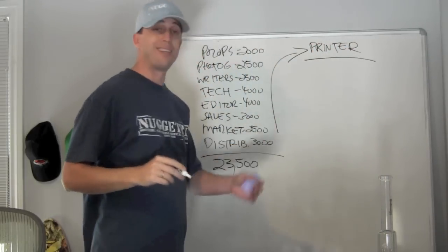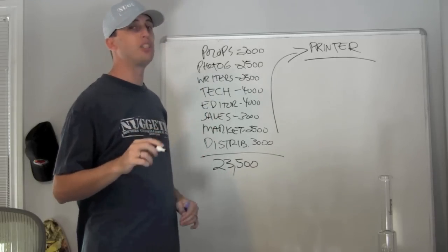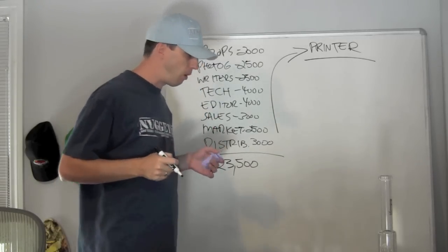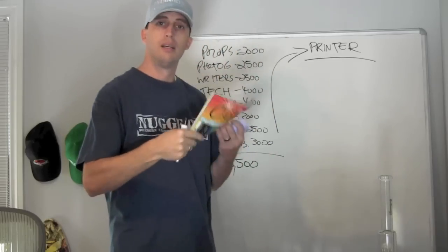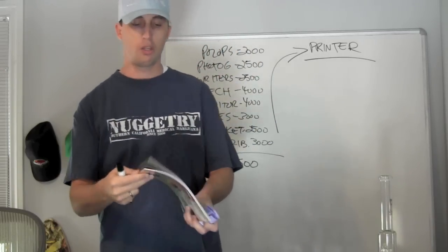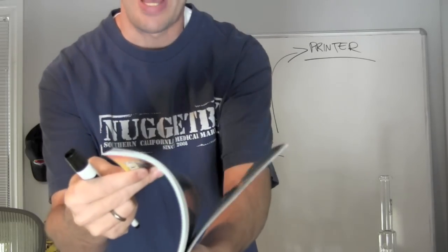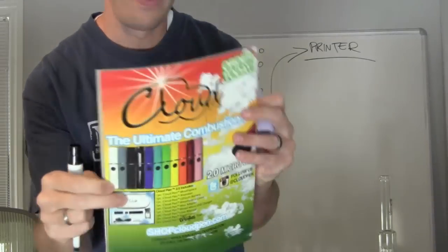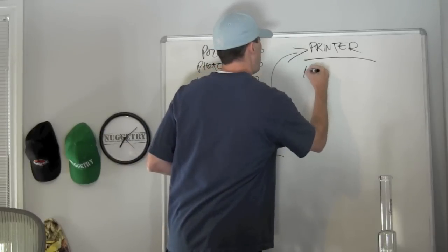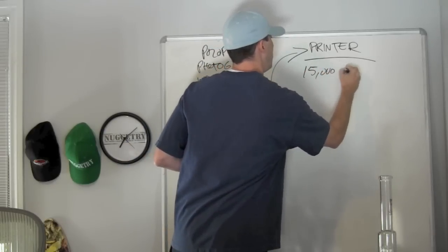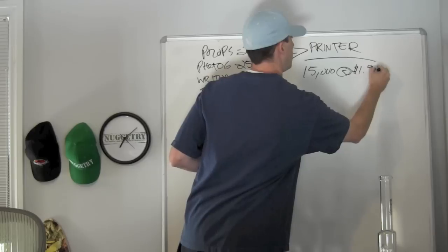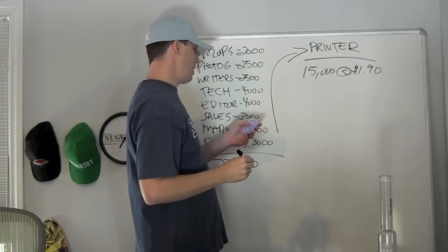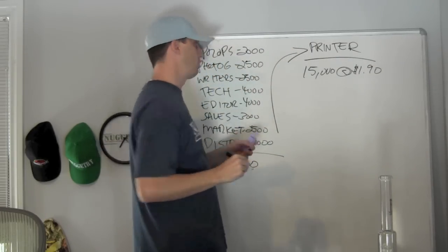At the printer, we pay about $1.90 for each copy that we print because it is such a high quality. Let me show you guys. This is high quality. This paper stock, as you see here, this is not thin. This is thick. To print 15,000 copies of the magazine at $1.90 a copy, we pay another $28,500 to the printer.